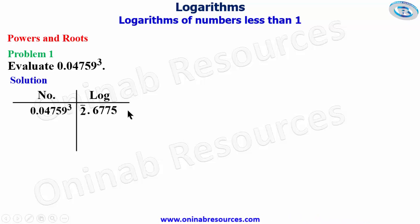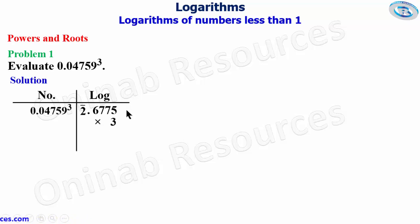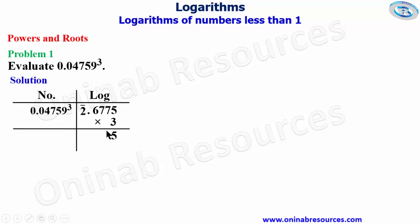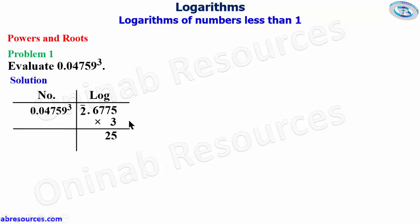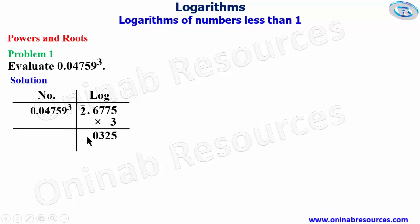With the power of three, we multiply our logarithm result by three. Three times 5 gives 15 — write 5, carry 1. Three times 7 gives 21, plus 1 gives 22 — write 2, carry 2. Three times 7 again gives 21, plus 2 gives 23 — write 3, carry 2. Three times 6 gives 18, plus 2 gives 20 — write 0, carry 2. We place our point here.